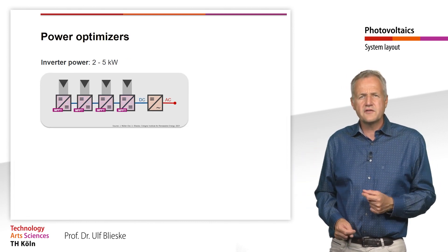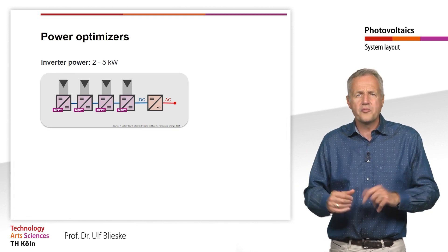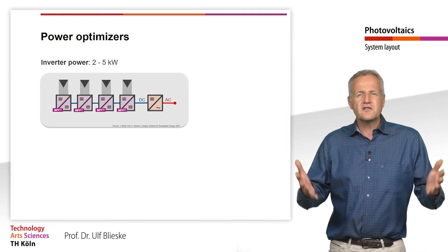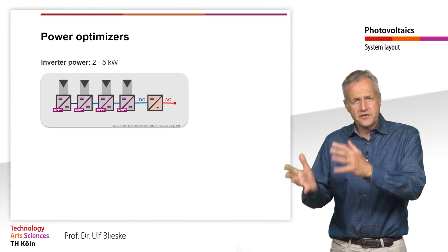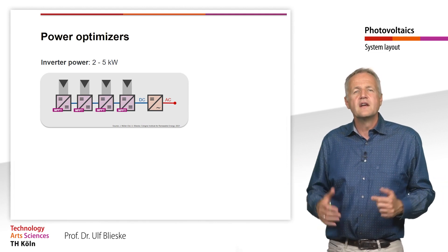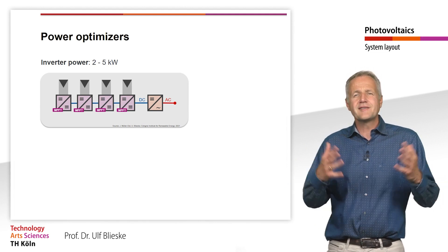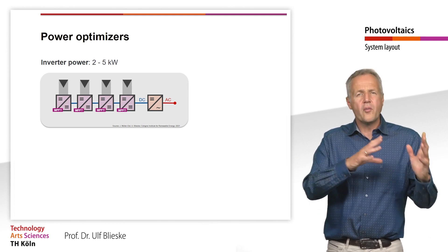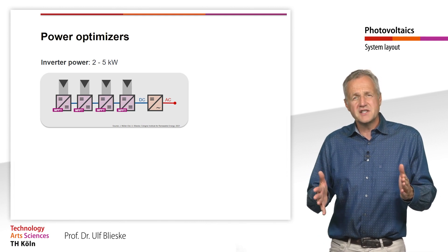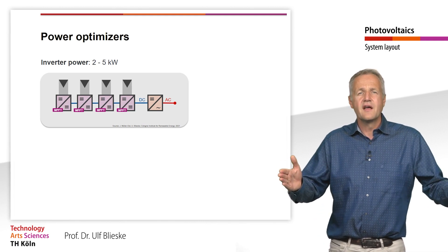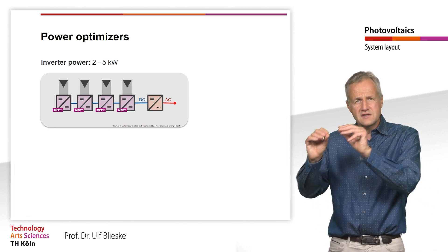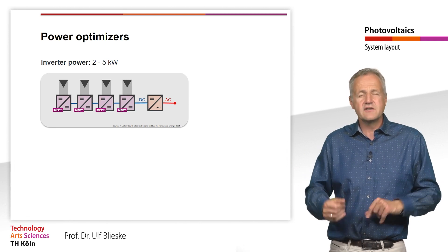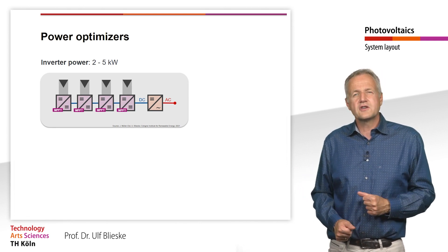An alternative to module inverters are so-called power optimizers, which became more and more popular during the past years. The concept mainly combines the advantage of a string inverter and a module inverter. These power optimizers are basically DC-DC converters. They take over the MPP tracking on module level. The modules with their MPPTs are connected in series, like in a string inverter, and then connected to the DC side of the inverter, in which the MPP tracking has to be deactivated or is not installed from the beginning.